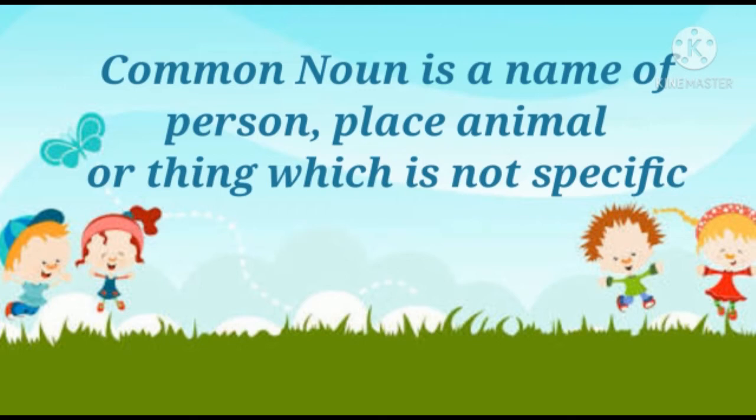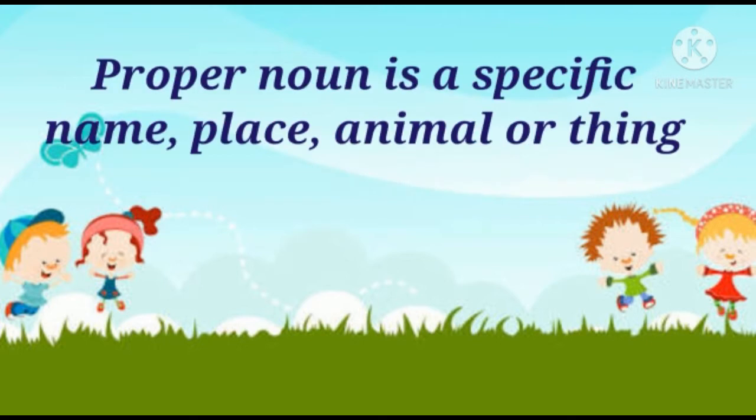In a proper noun, we have to be specific about names of a person, place, animal, or thing. We have to mention their specific names.